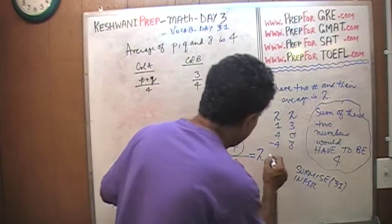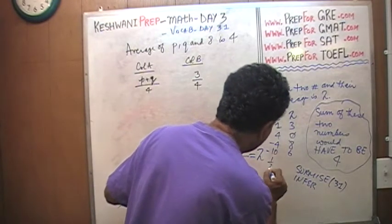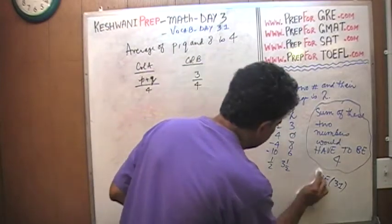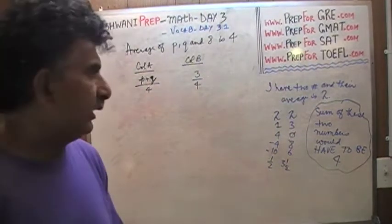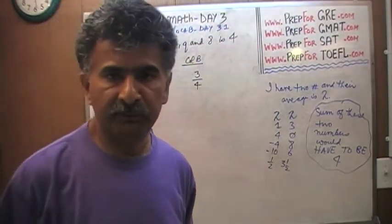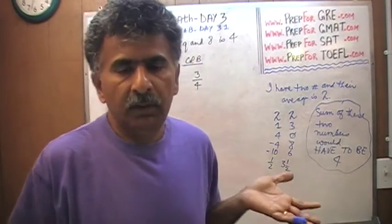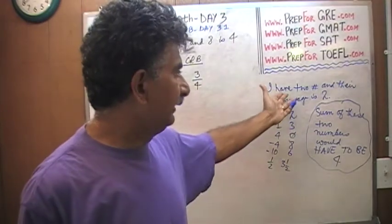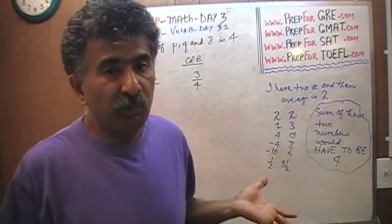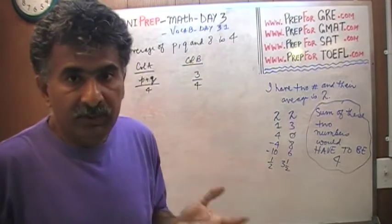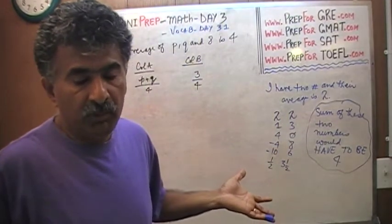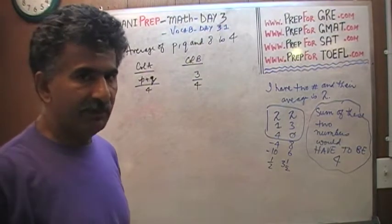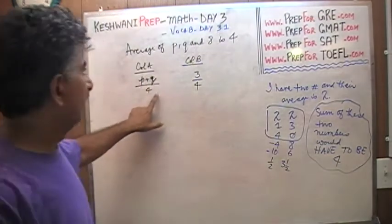You can have negative four and eight. That adds up to four. You can have negative ten and six. You can have half and three and a half. Because nowhere in this problem we were told that these two numbers are integers. And even if they were integers, still there are negative numbers, infinite negative numbers which will give you the sum of four. So unless we tell you that these two positive numbers, the possibilities are infinite. We cannot tell what these two numbers are. But one thing that we can say for sure is that whatever these two numbers are, they have to add up to four. The same exact thing is going on here.